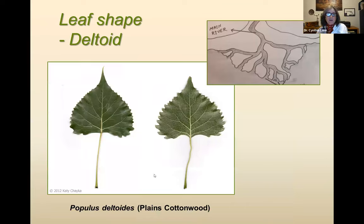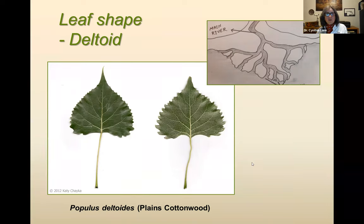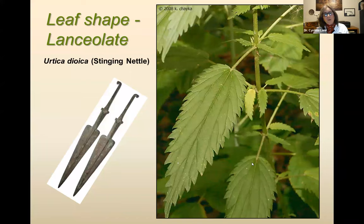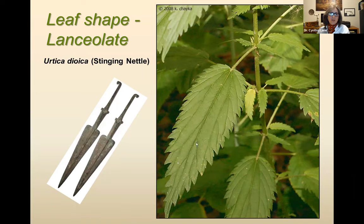A really common tree in our area is cottonwood, and the scientific name describes the leaf shape: deltoid, like triangular or like a river delta — Populus deltoides. So it has a triangular leaf, kind of flat on the bottom. Another common leaf shape is lanceolate — just like it sounds, it's lance-shaped: wider at the bottom, pointy tip, kind of just tapers. A plant in our area with that leaf shape is stinging nettle — lanceolate is a fairly common leaf shape.